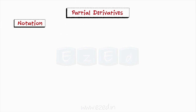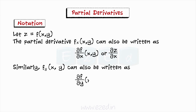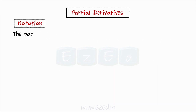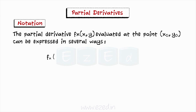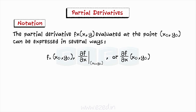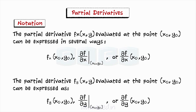Let us now look at different notations for the partial derivative. Let z equal f(x, y). The partial derivative f sub x of (x, y) can also be written as del f by del x of (x, y) or del z by del x. Similarly, f sub y of (x, y) can also be written as del f by del y of (x, y) or del z by del y. Evaluated at a point (x₀, y₀), these can be expressed as f sub x of (x₀, y₀), or del f by del x evaluated at (x₀, y₀).